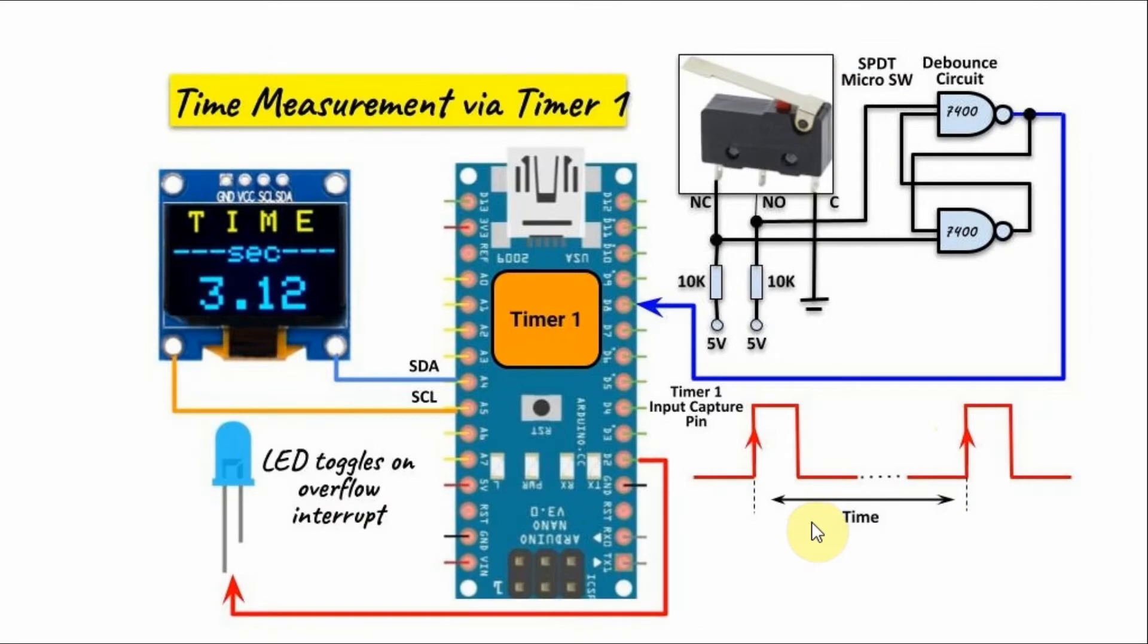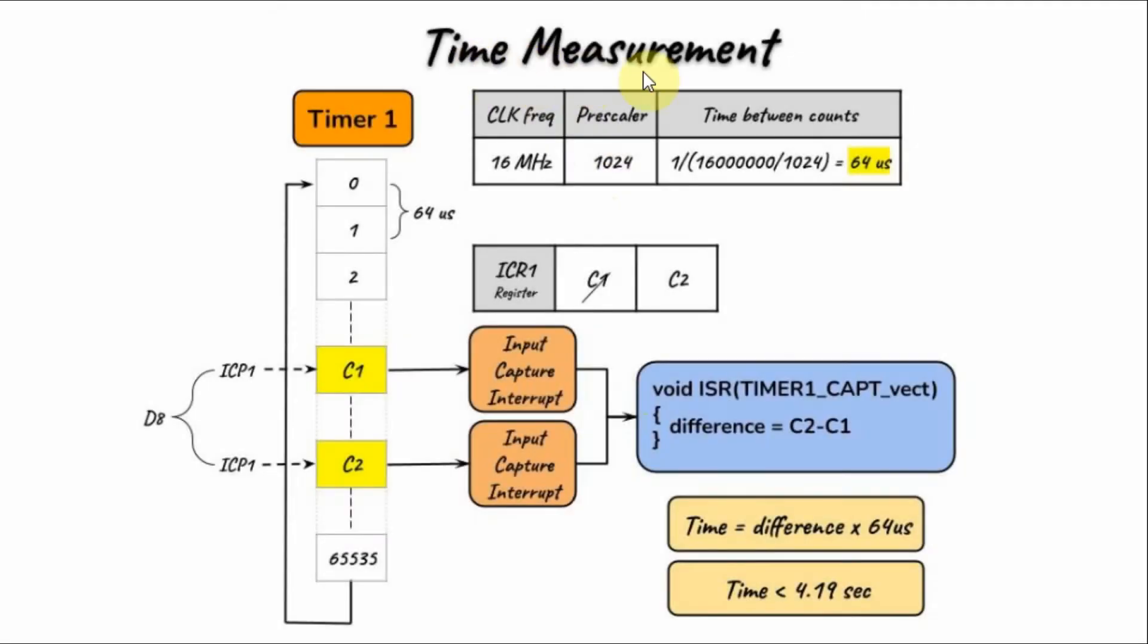Keep in mind the measurement of time between two consecutive pulses must be performed within the span of overflow interrupt. Let's see how we can measure time when Timer 1 is programmed in input capture mode. The clock frequency is fixed at 16 MHz. We set the prescaler to this value and the time between each count is calculated as 64 microseconds.